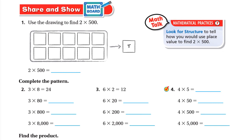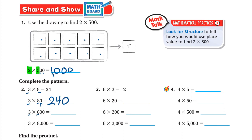Now for Share and Show: use the drawing to find 2 times 500. Two times five hundred — multiply using the basic fact: 2 times 5 is 10, then write the two zeros, so it's 1,000. Complete the pattern: 3 times 8 is 24. Three times 80: multiply 3 by 8 to get 24, write one zero — 240. Three times 800: 24 with two zeros — 2,400.